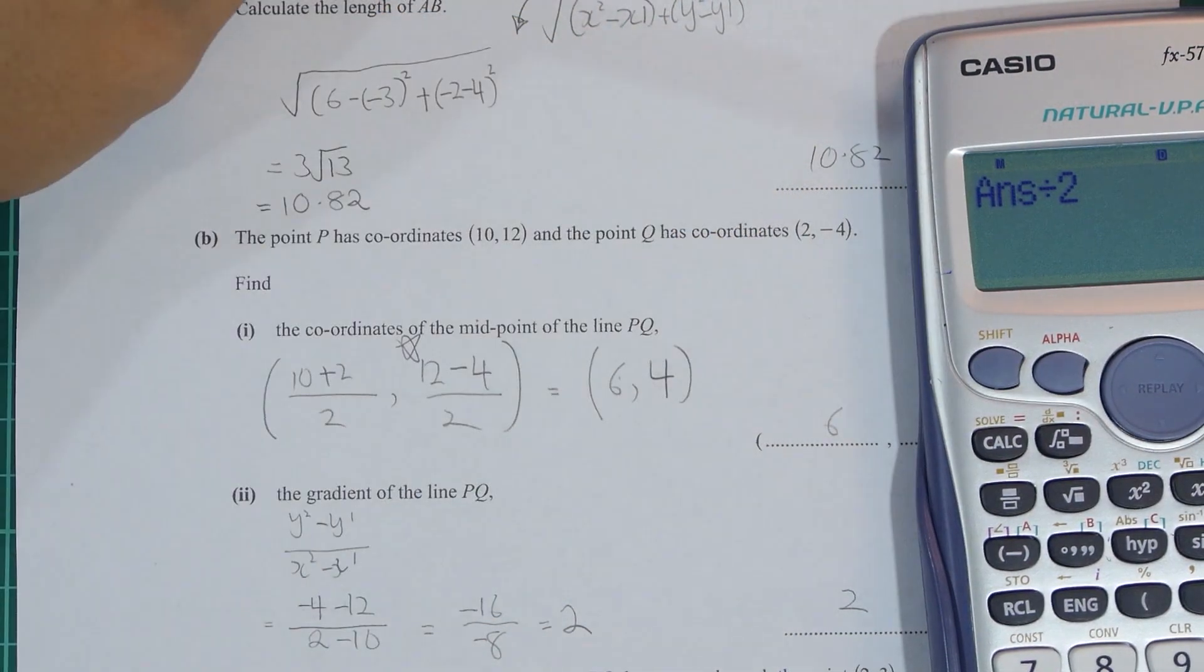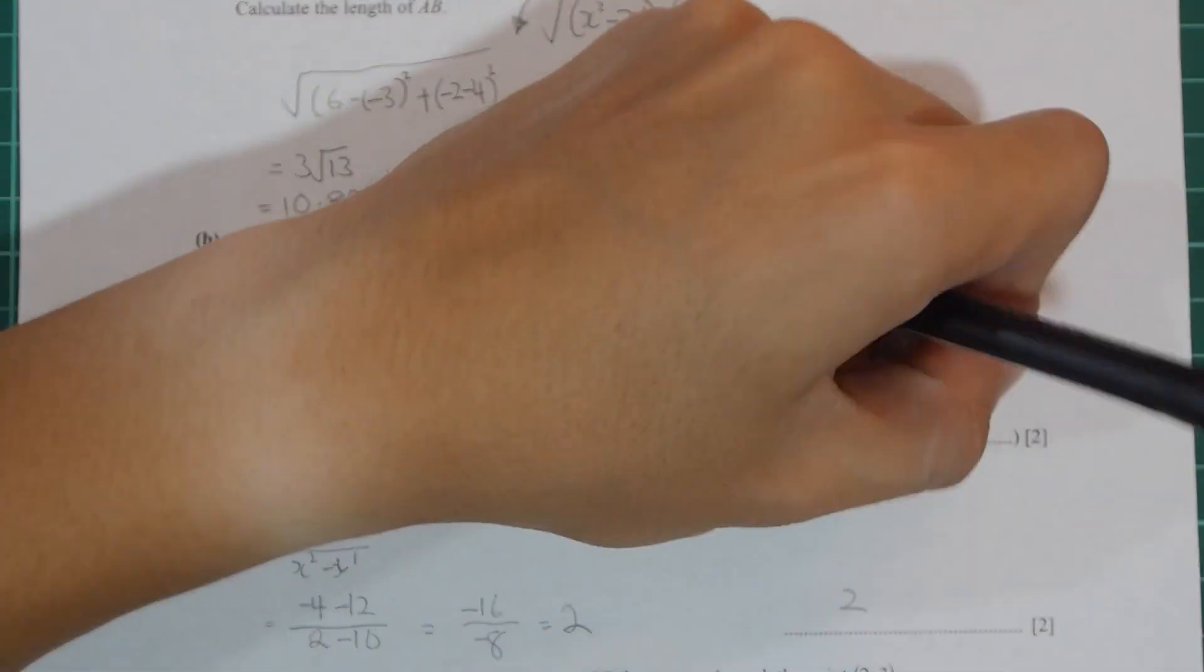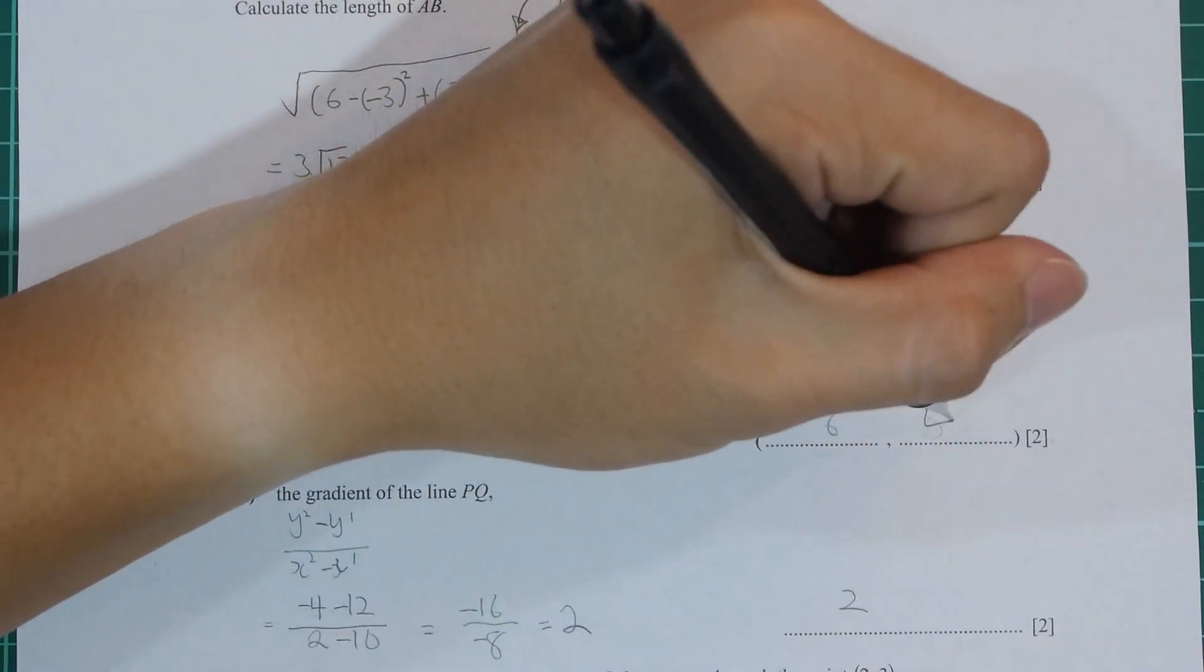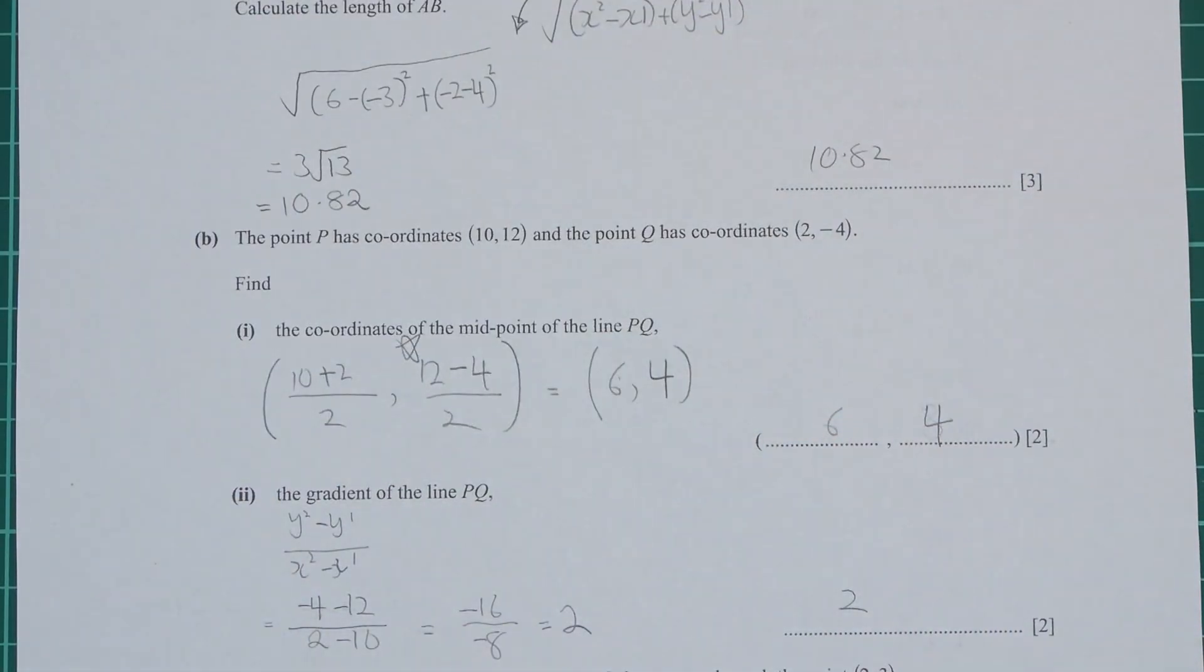However, I treated it as 12 plus 4 instead. So if you run the calculation again, you will get 4 as the final result.